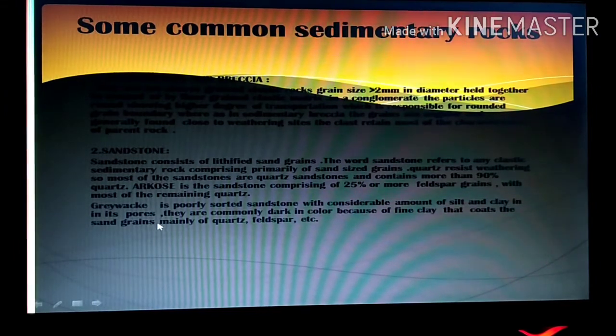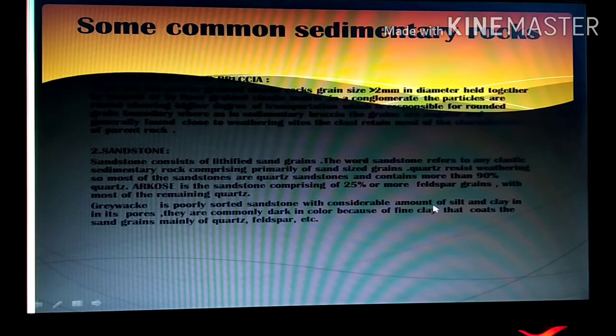The graywacke is a poorly sorted sandstone with considerable amount of silt and clay in its pores. They are commonly dark in color because of the fine clay that coats the sand grain which are mainly of quartz and feldspar.